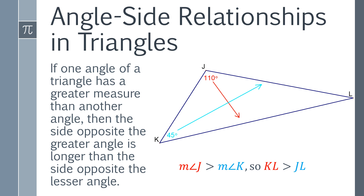We can flip this around: if one angle of a triangle has a greater measure than another angle, then the side opposite the greater angle is longer than the side opposite the lesser angle. Here, the measure of angle J is 110 degrees and the measure of angle K is 45 degrees, so we can say with certainty that segment KL is longer than segment JL.